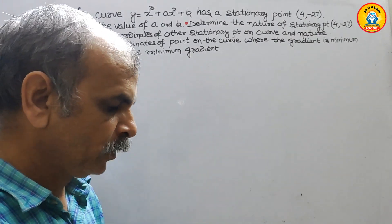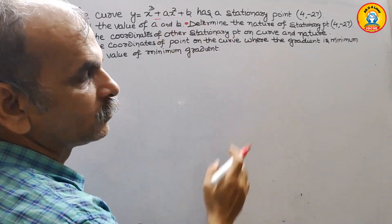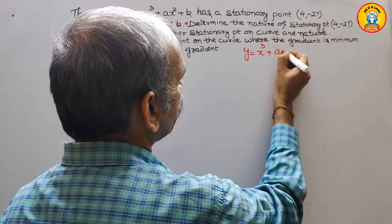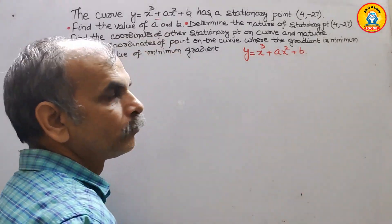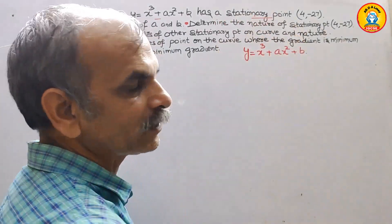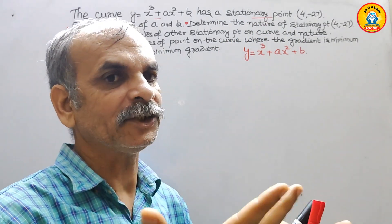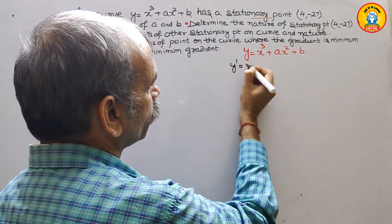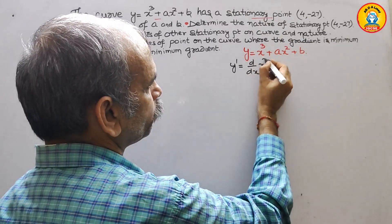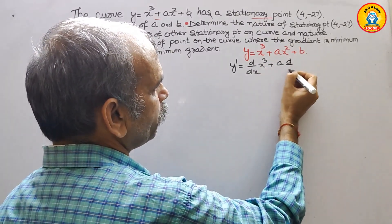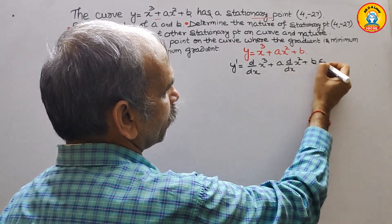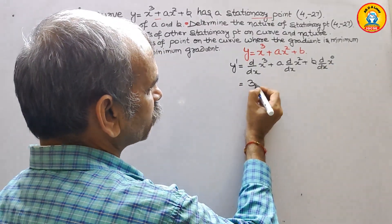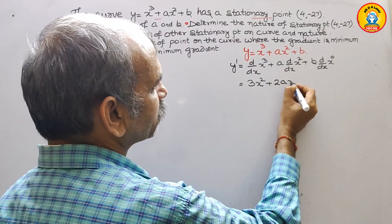We will go through this one by one. First, we write the given equation: y equals x cubed plus ax squared plus b. Since they have told us there is a stationary point, we need to find y dash — the differentiation of this. So y dash equals d/dx of x cubed plus a times d/dx of x squared plus b. Differentiating, we get 3x squared plus 2ax.